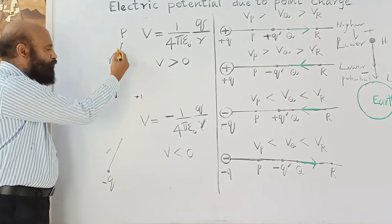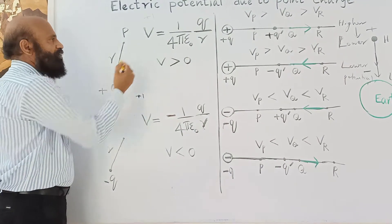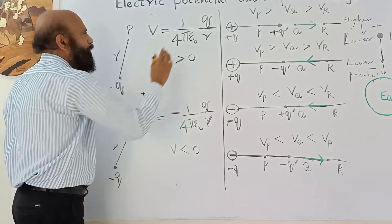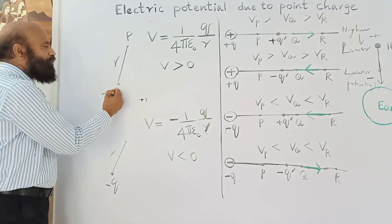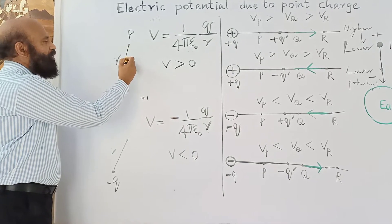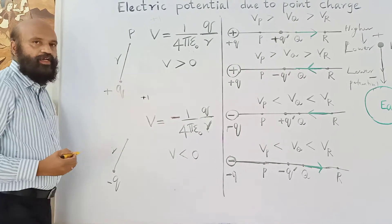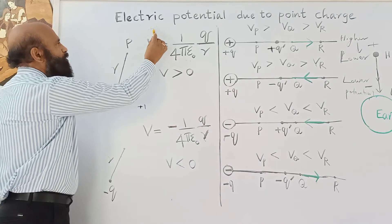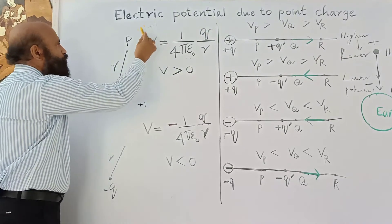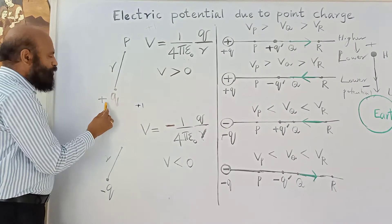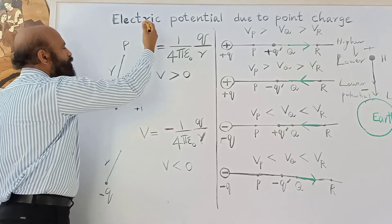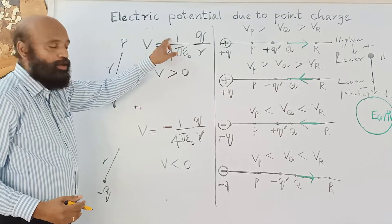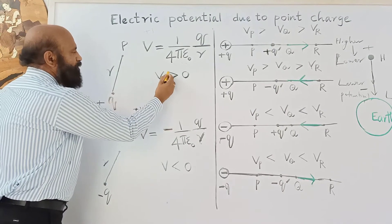The potential at a point due to a point charge is given by the relation V = (1/4πε₀)(q/r). For a positive charge, nearer points are at a higher potential. Potential at a point is defined as the work done in bringing a unit positive charge from infinity to that point. Since a positive charge repels the test charge, we must do work — that is why potential is a positive quantity for a positive charge.